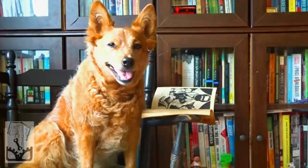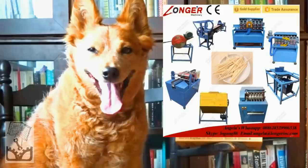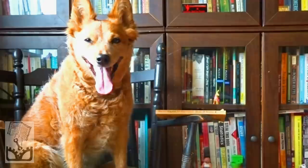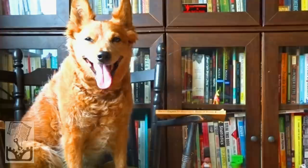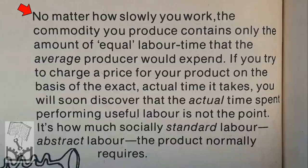This concept of abstract labor helps explain a silly critique of the labor theory of value that some people often use. They'll say: 'Oh hey, you think value comes from labor? But what if I spent all day whittling toothpicks by hand? Would that make those toothpicks worth a gazillion dollars? Checkmate socialist!' Well, no — because with industrial automated manufacturing, the abstract labor, the typical amount of labor that it takes to make a toothpick, is very low. So no matter how long a person's toothpick-making process is, the market price will defer to what is considered the typical abstract amount of labor that toothpicks contain. As Smith and Evans state: 'No matter how slowly you work, the commodity you produce contains only the amount of equal labor time that the average producer would expend.'